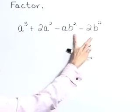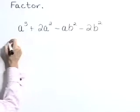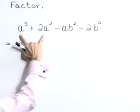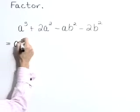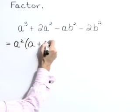Since we're given four terms, let's think factoring by grouping. So let's look at these first two terms and pull out a greatest common factor of a squared, rewriting this as a squared times a plus 2.